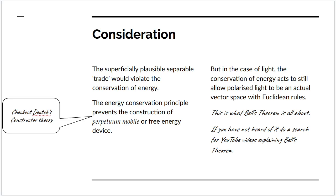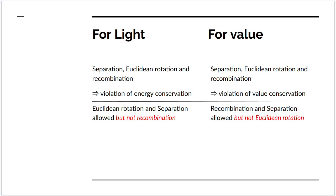In the case of light, the conservation of energy allows light to still be a polarized light, still to be a proper vector space, a proper Euclidean vector space. And that it is a proper Euclidean vector space is what Bell's theorem is all about. If you haven't heard of this, it's a very important theorem in quantum mechanics dating from the 60s. I suggest you review one of the many videos on Bell's theorem.